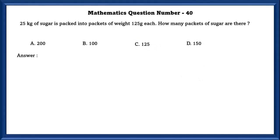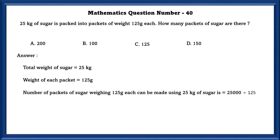Mathematics question number 40. 25 kg of sugar is packed in two packets of weight 125 grams each. How many packets of sugar are there? Total weight of sugar is 25 kgs. Weight of each packet is 125 grams. Number of packets of sugar weighing 125 grams each can be made using 25 kg of sugar is 25,000 divided by 125. 200 packets of sugar are there.